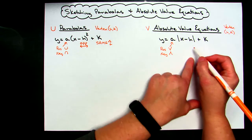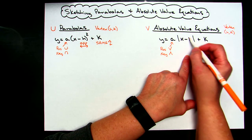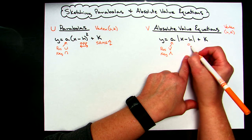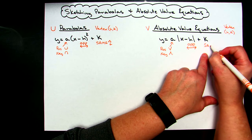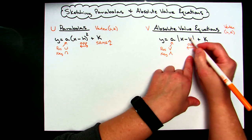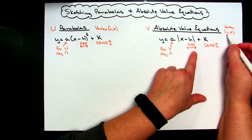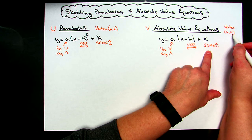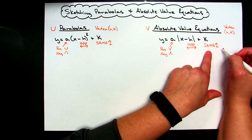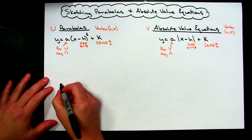With those same patterns I can look at the absolute value equation. The h is on the inside of the function so it again tells me how to shift opposite left or right, and the k tells me how to shift the same up or down. Once you get the basic idea of how these things shift, you can do rough sketches very quickly.